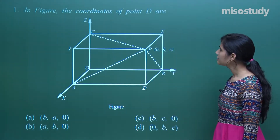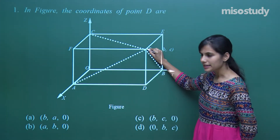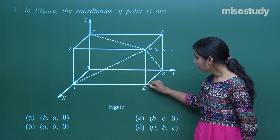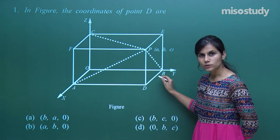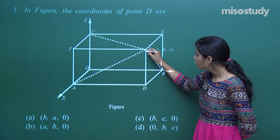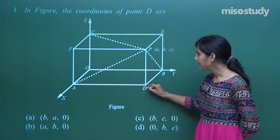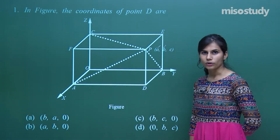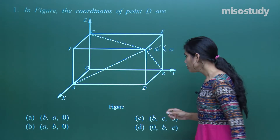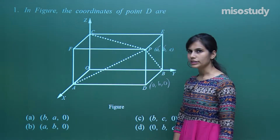The first question asks: in this figure, what are the coordinates of point D? There is a point B in space and a perpendicular is drawn stopping at the x-y plane. Point D lies completely in the x-y plane, so its z coordinate will be 0. Since we're dropping a perpendicular to the x-y plane, the x and y coordinates remain exactly the same — only z changes. Therefore the coordinates of point D are (a, b, 0).